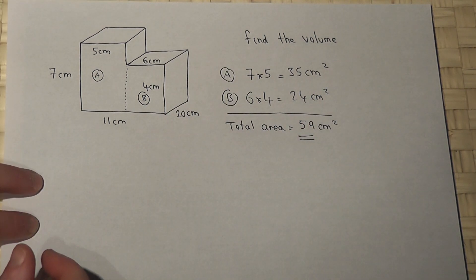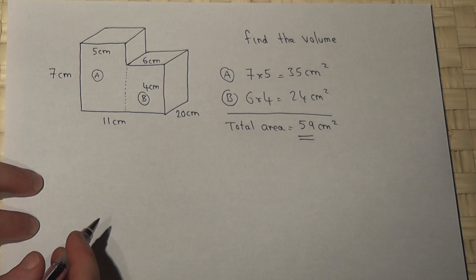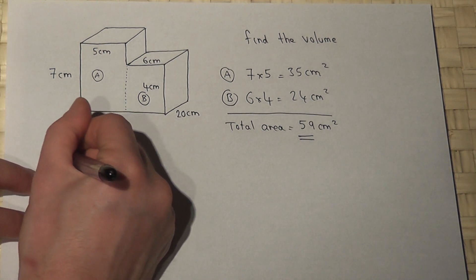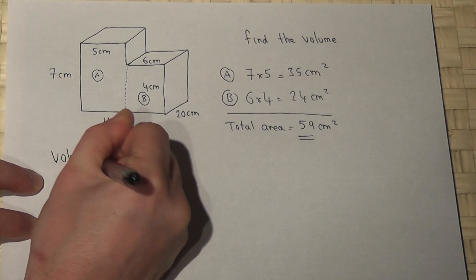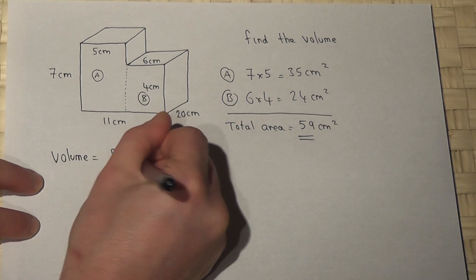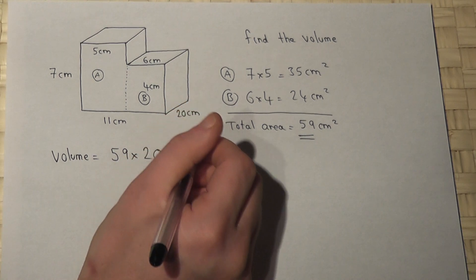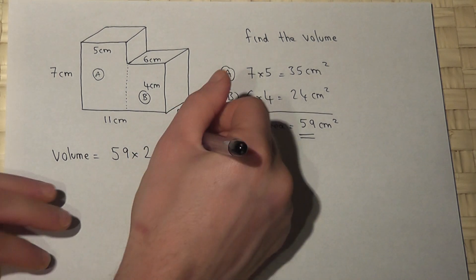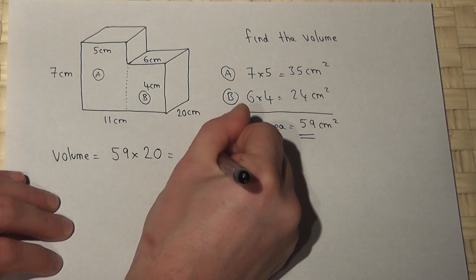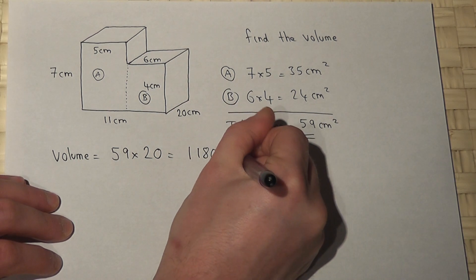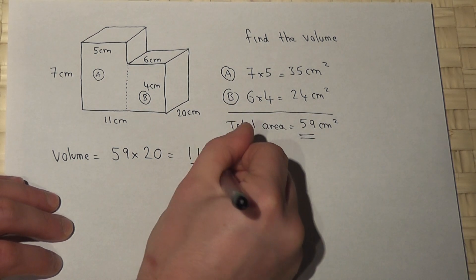Now once we know the area of the face, to find the volume is very simple. The volume is just the area of the face times by the depth. So we do 59 times 20 and that works out at 1180 centimeters cubed. Don't forget the units.